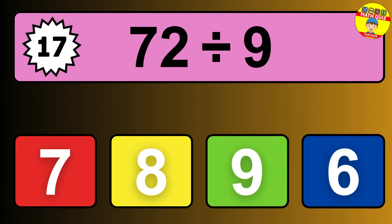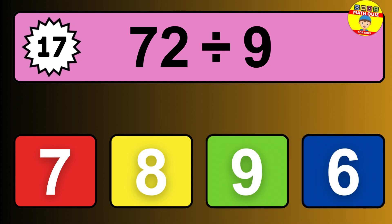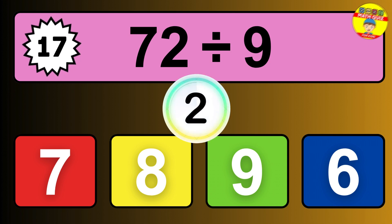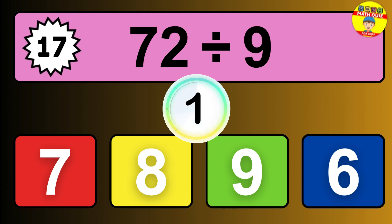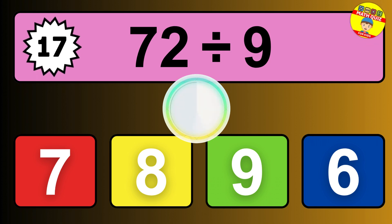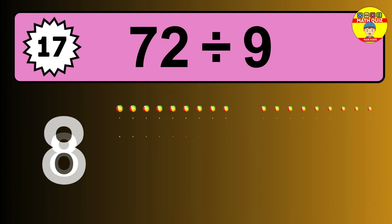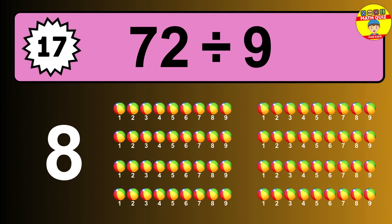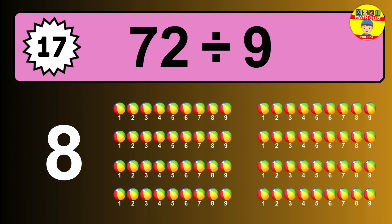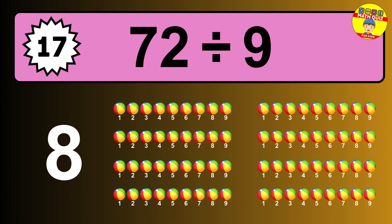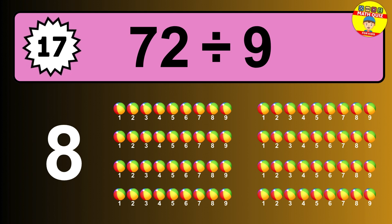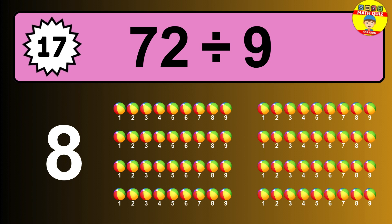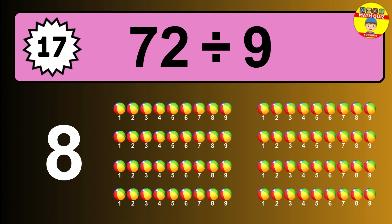72 divided by 9 is... time to think. Let's go to the solution. Divide the number 72 by 9. Each group contains 9 units. So dividing 72 by 9 results in 8 equal groups. Thus, the result is... 72 divided by 9 equals 8.